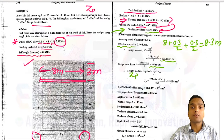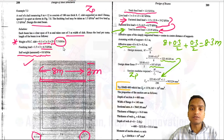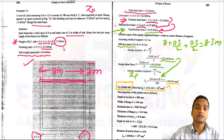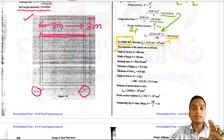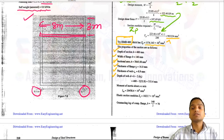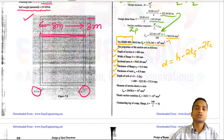The required plastic section modulus ZP equals M × gamma_m0 divided by FY, with gamma_m0 = 1.1. From the steel table we choose ISMB 400, which has ZP greater than the required value. We list its properties: depth of section, width of flange, total sectional area, flange thickness, web thickness. Depth of web d = h − 2(flange thickness + corner radius) = 333 mm.